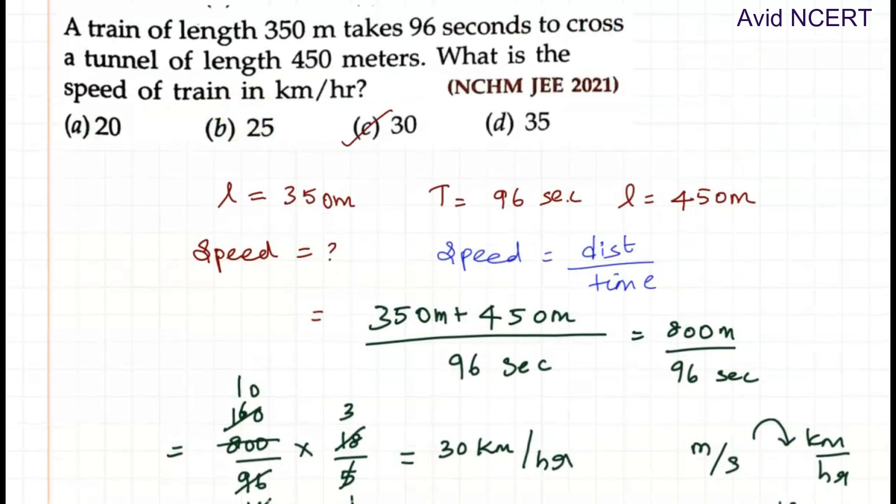So the speed of the train here is 30 kilometers per hour. Thanks for watching. If you have any doubts, please let me know in the comments.